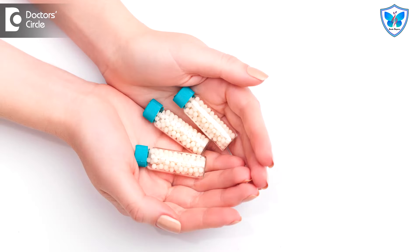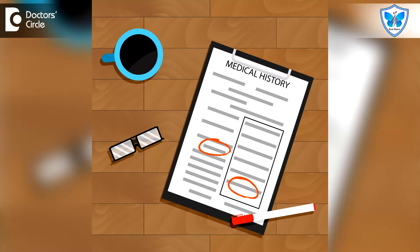The homeopathic approach is going to be individualistic. Every person's reason for getting a fungal infection is not the same. As we have different types of fungal infections, we mainly concentrate on the individualistic approach — what is the reason, and from where did the person get this fungal infection? A detailed case history will definitely help us to completely cure this fungal infection.